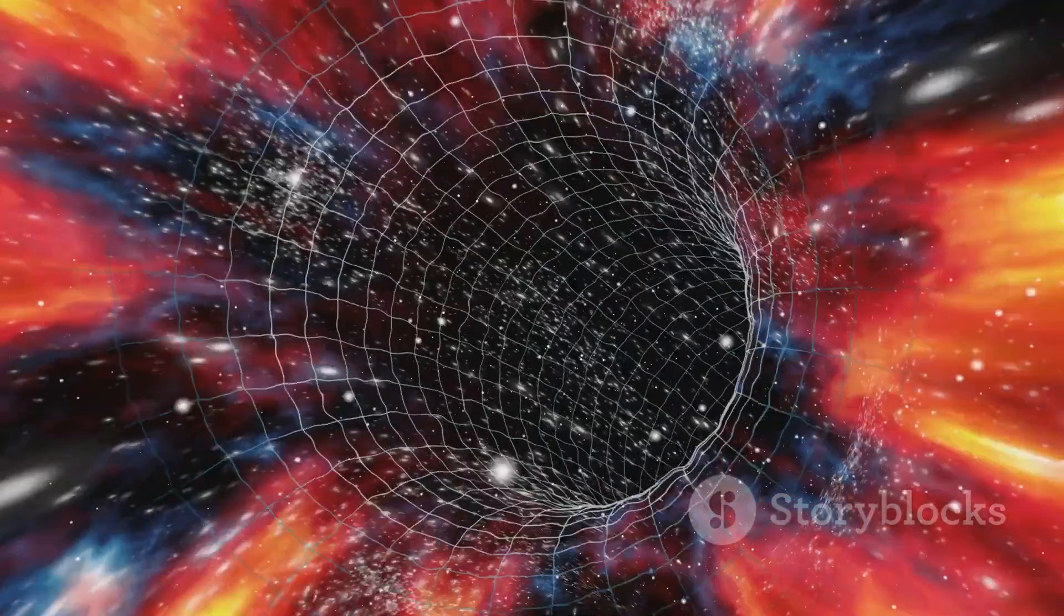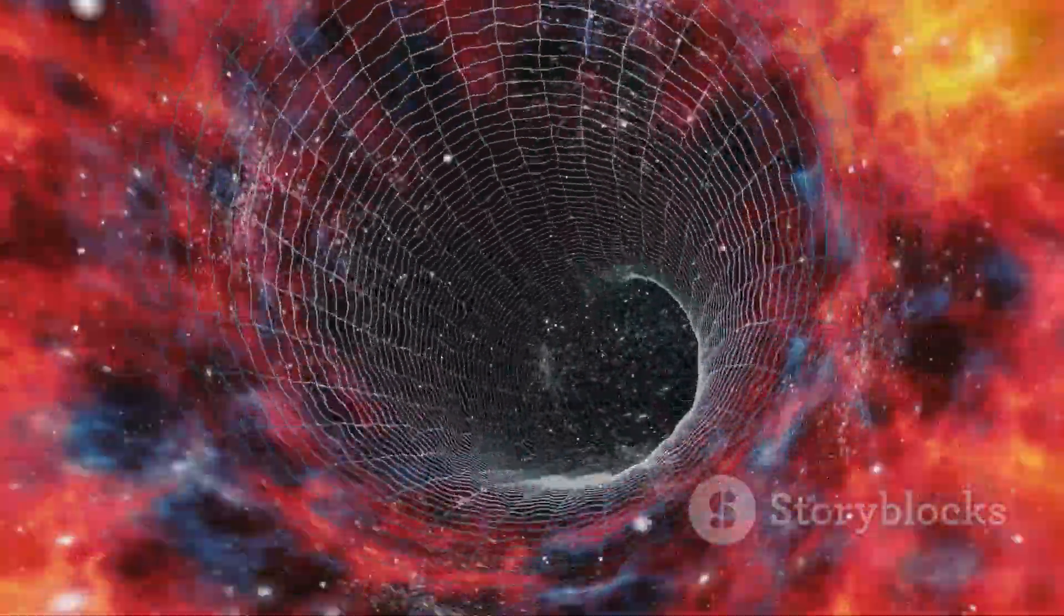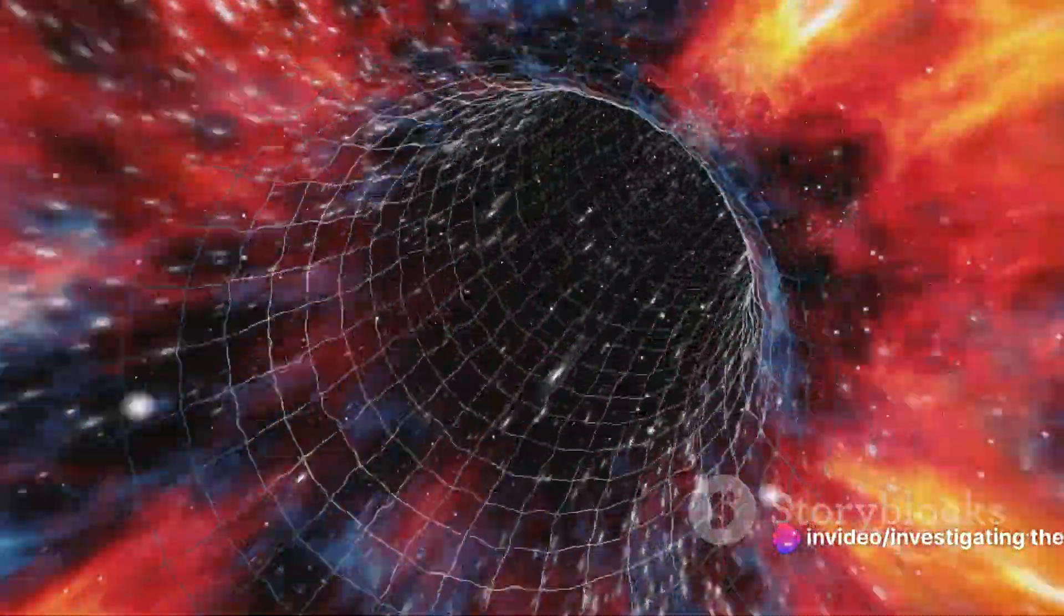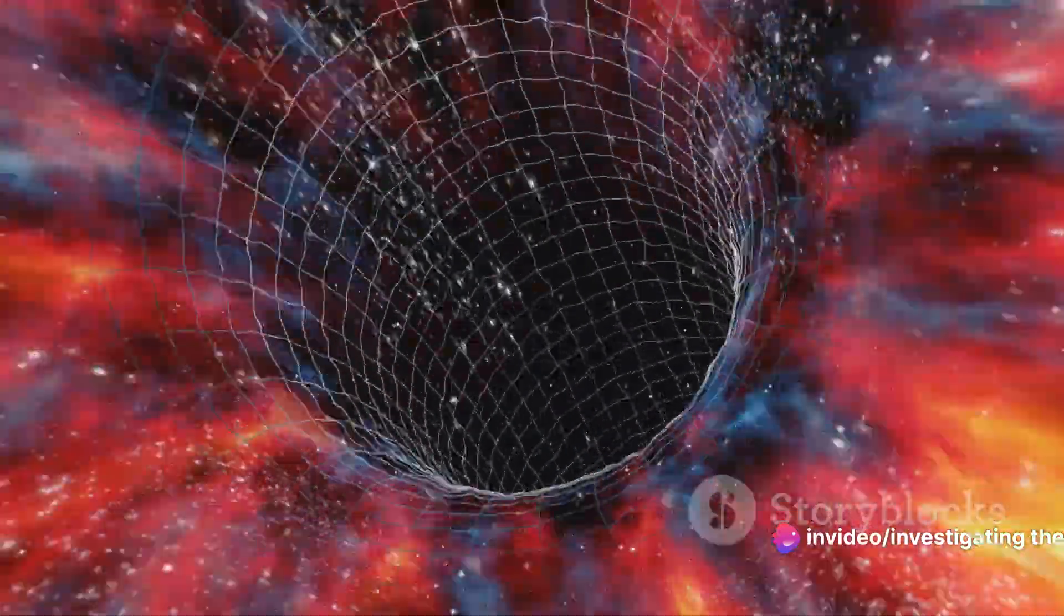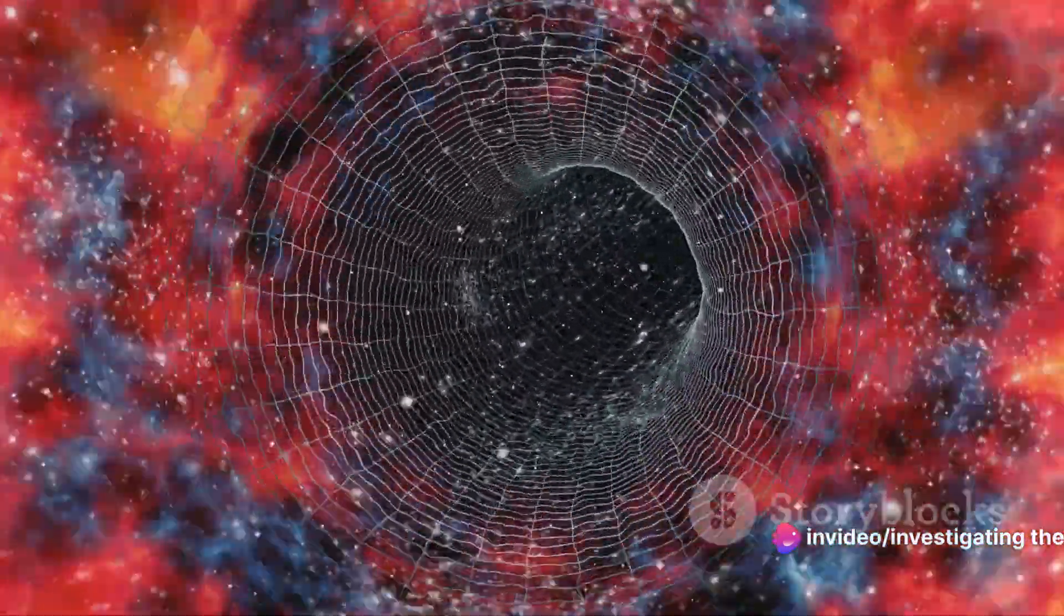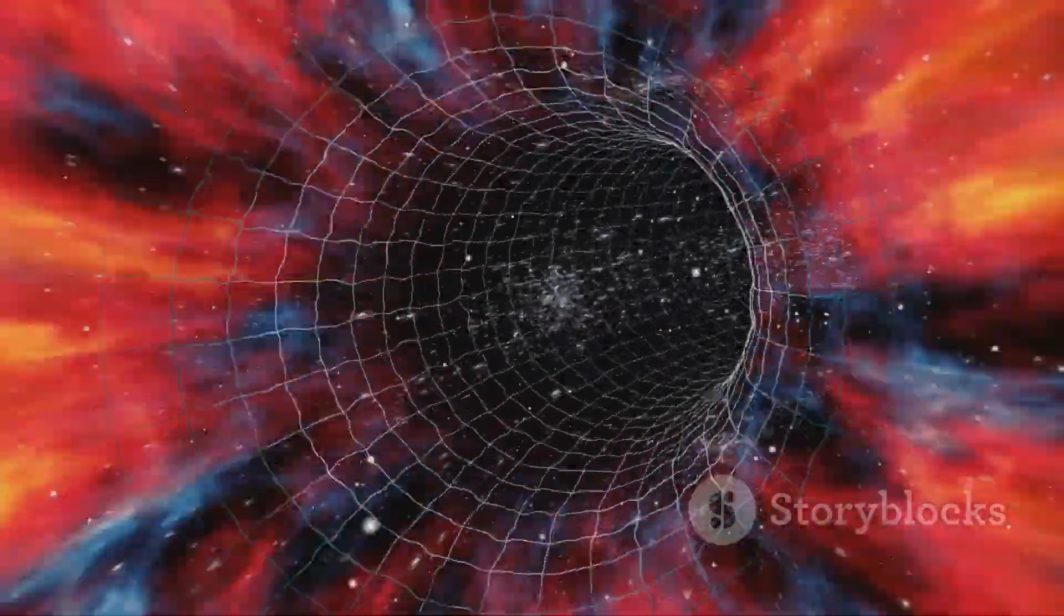Imagine a tightly rolled sheet of paper. To a distant observer, it appears one-dimensional, a mere line. But upon closer inspection, we discover a second dimension wrapped tightly around itself. This, in essence, is how string theory looks at our universe.